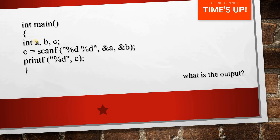In the main function, you can see there are three variables declared and the types of the variables are integer. In the next line, we are taking the inputs from the users. As a and b are the integer types, we write here %d and %d. The result will be stored into another variable c.